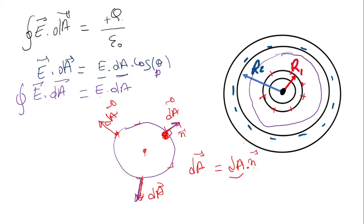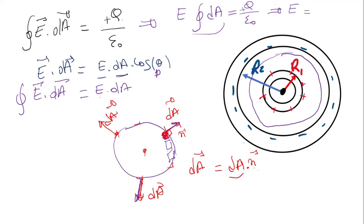The Q enclosed is plus Q. Since the electric field is uniform and constant on this zone, it can be taken outside the integral. The integral of dA over the Gaussian surface gives the total surface area, which is 4πr². Therefore, the electric field is E = Q over 4πε₀r², where r is the radius of the Gaussian surface between R1 and R2.